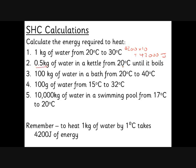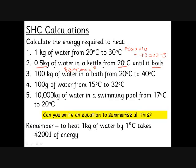If we want to heat half a kilogram of water from 20 degrees C to boiling, that's an 80 degree C increase in temperature. So it's 80 times 4,200 which is 336,000 joules. But we're only heating half a kilogram, not a whole kilogram, so we halve that to get 168,000 joules.